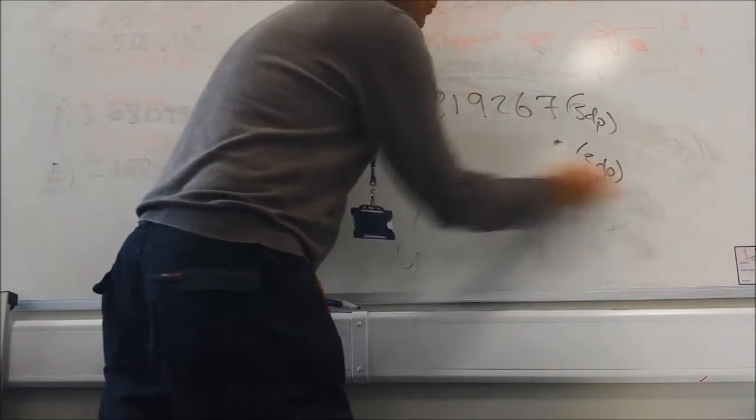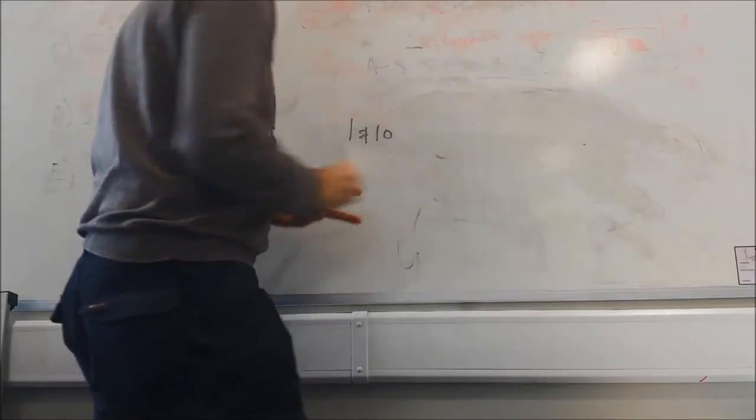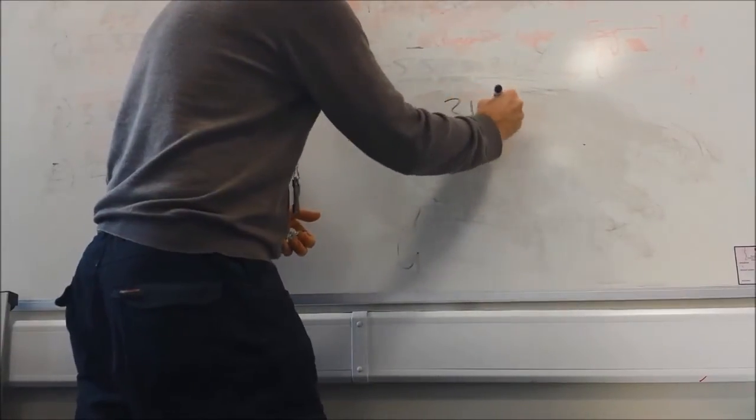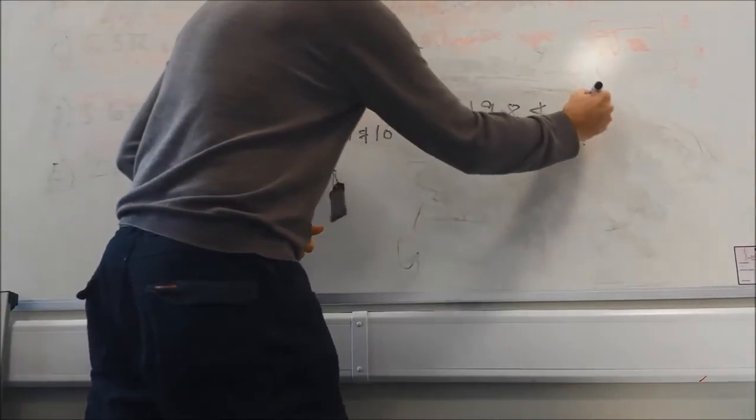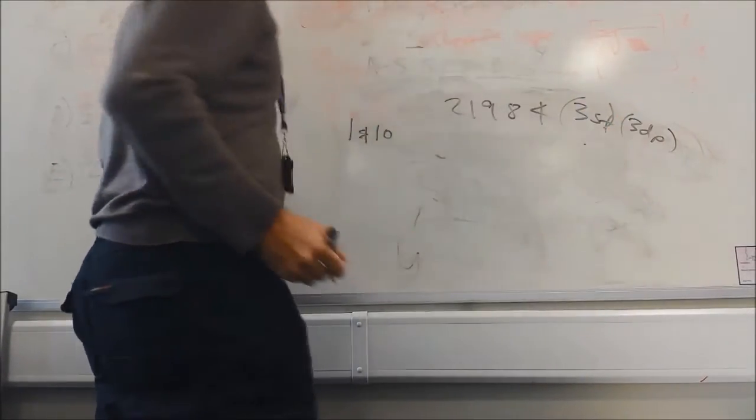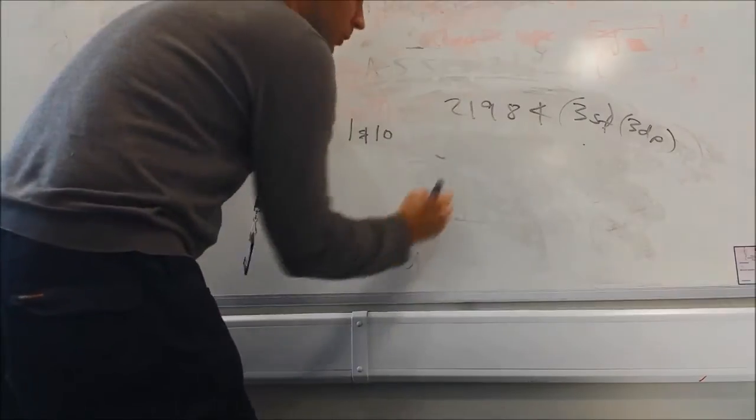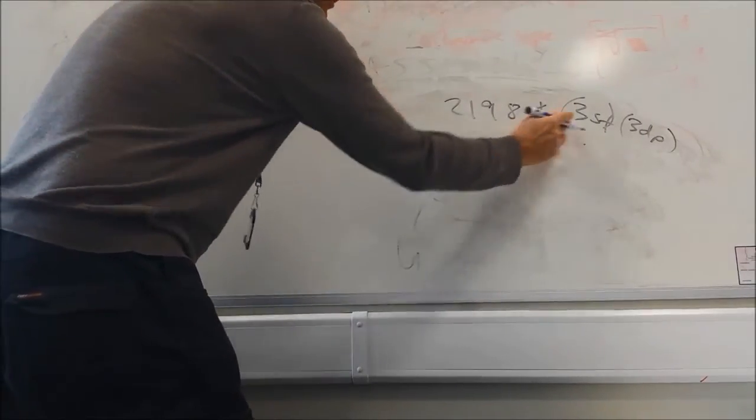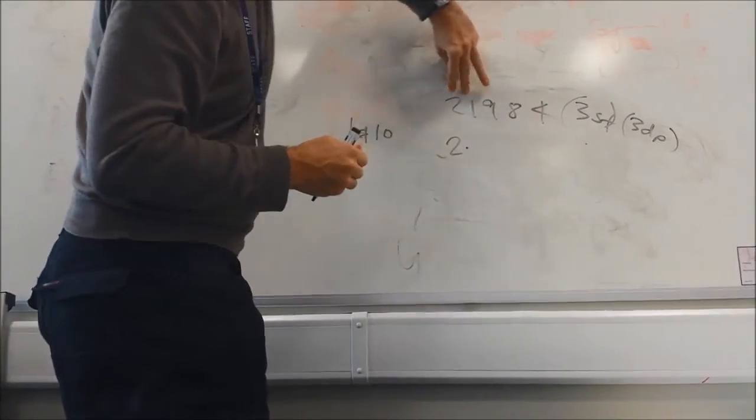So another quick example, just to capture that, 21984. We'll do it to three significant figures and three decimal places. So again, I've got to put a decimal point in, so two point, so three significant figures, first, second, and third.